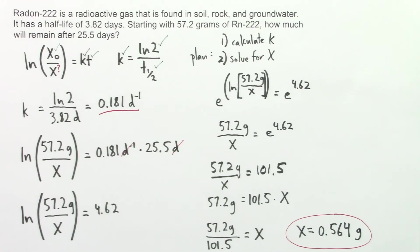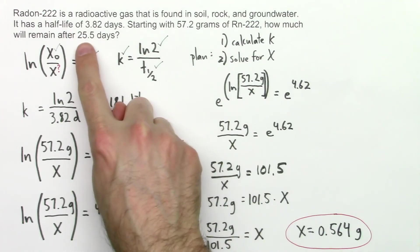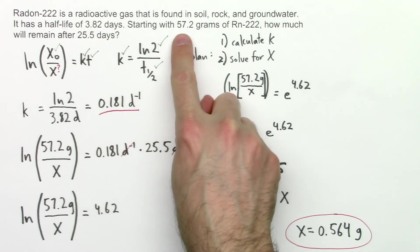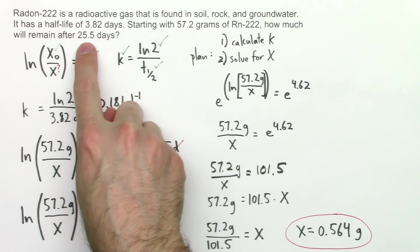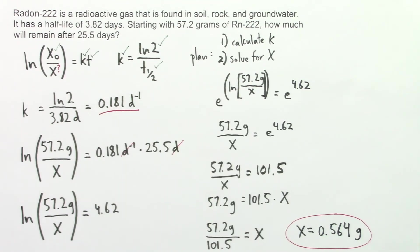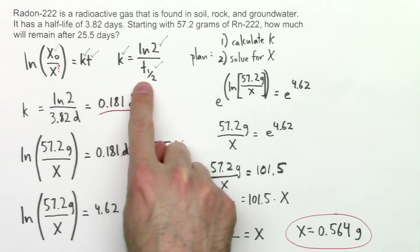Now real quick, what are we actually solving for? What is x? Well, x is the amount of radon-222 that is remaining after 25.5 days if we start with 57.2 grams. So we start with 57.2 grams, 25.5 days go by, and we're left with 0.564 grams of radon-222. Once again, this is a nuclear decay problem. And when we have a more complicated nuclear decay problem like this, we usually use these two equations together to solve for a variety of these different variables.